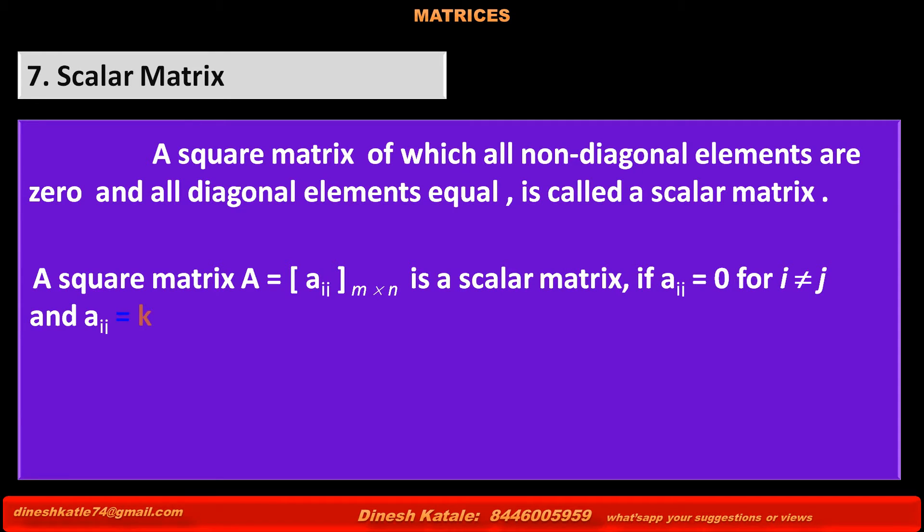A square matrix A = [aij] of order m into m is a scalar matrix if element aij = 0 for i ≠ j, means for all non-diagonal elements,